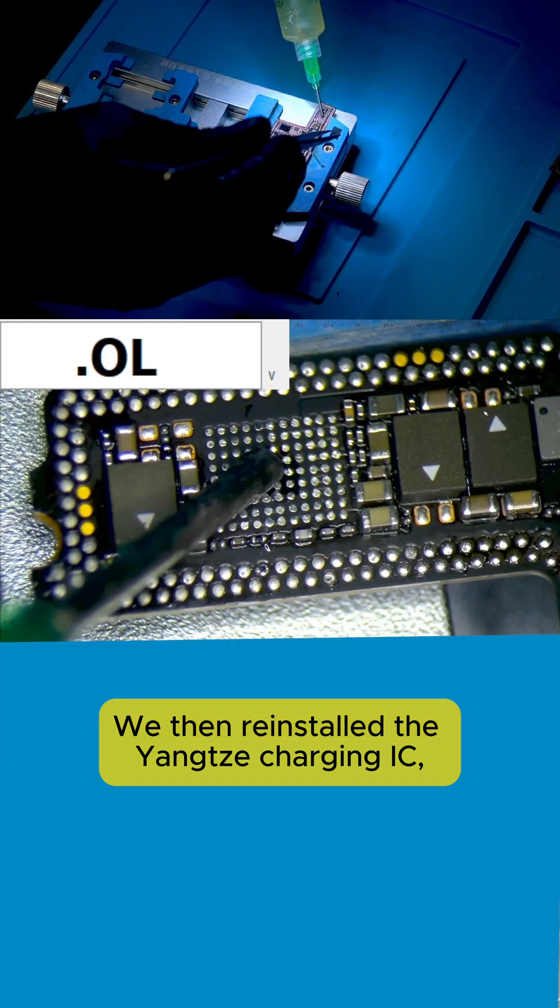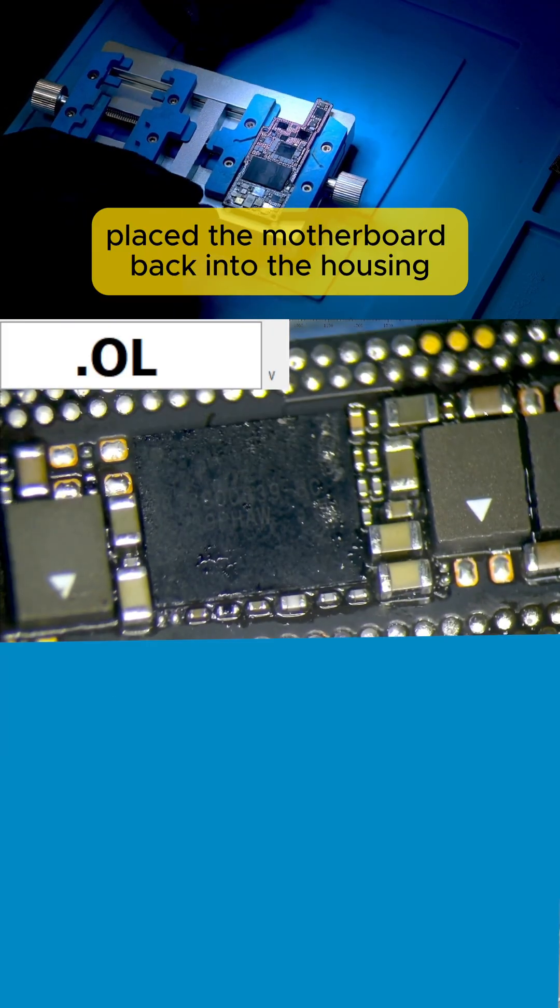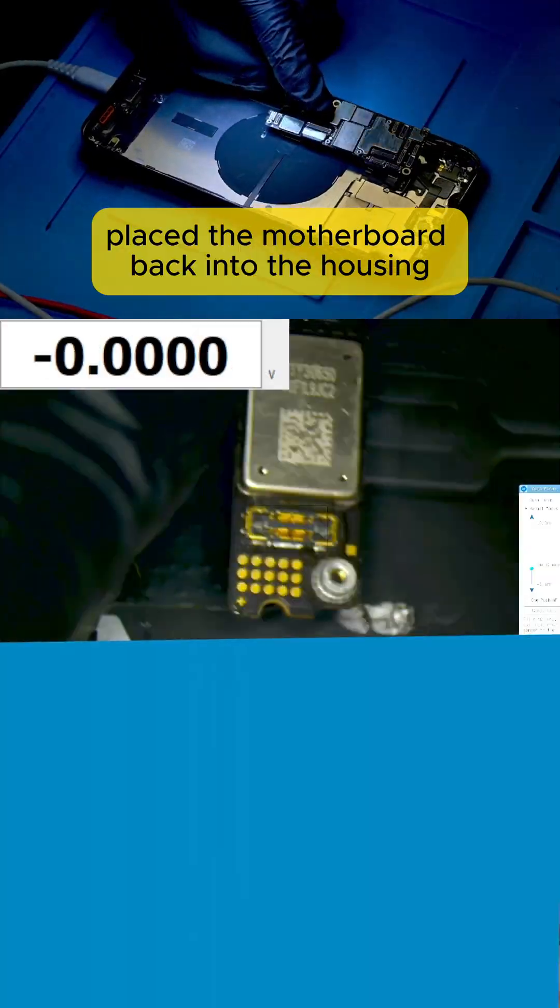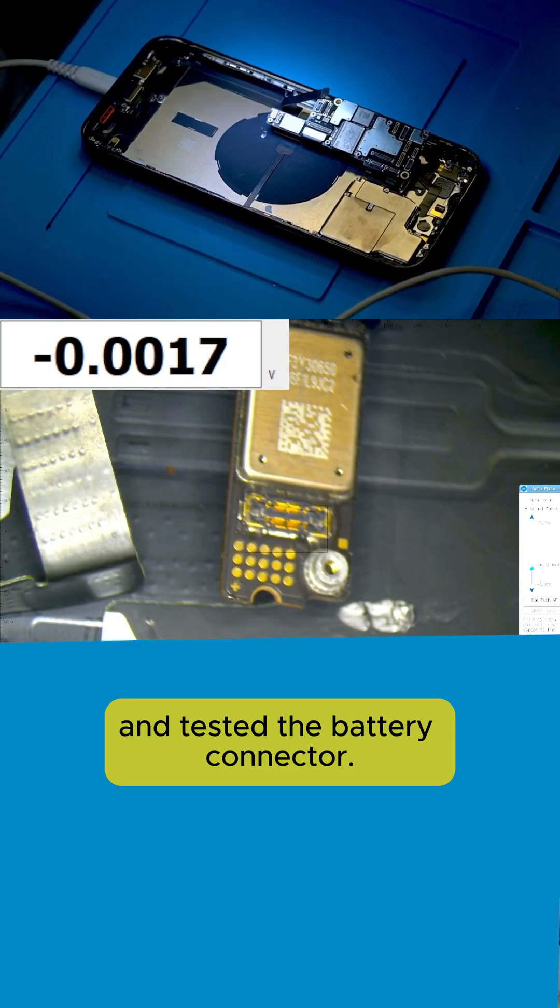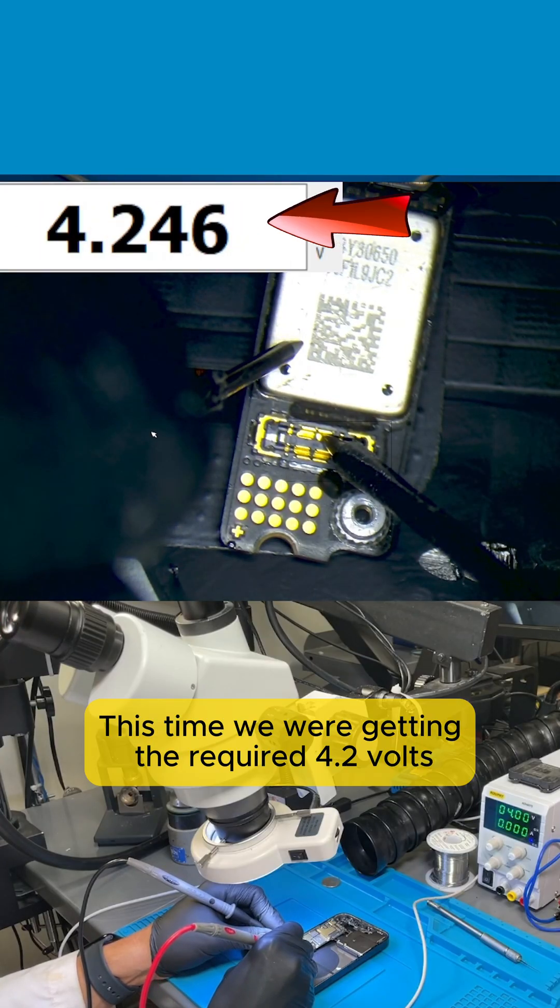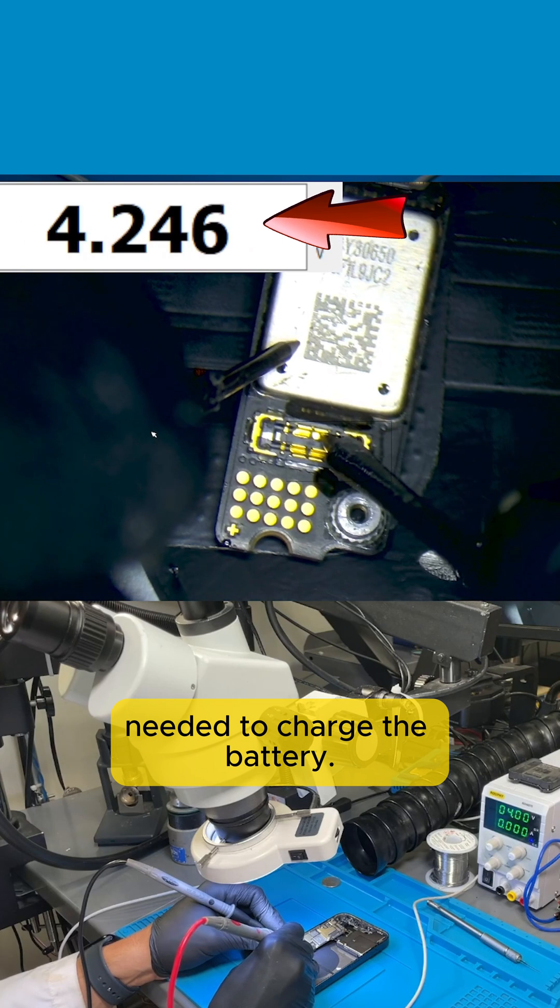We then reinstalled the Yangtze charging IC, placed the motherboard back into the housing, and tested the battery connector. This time, we were getting the required 4.2 volts needed to charge the battery.